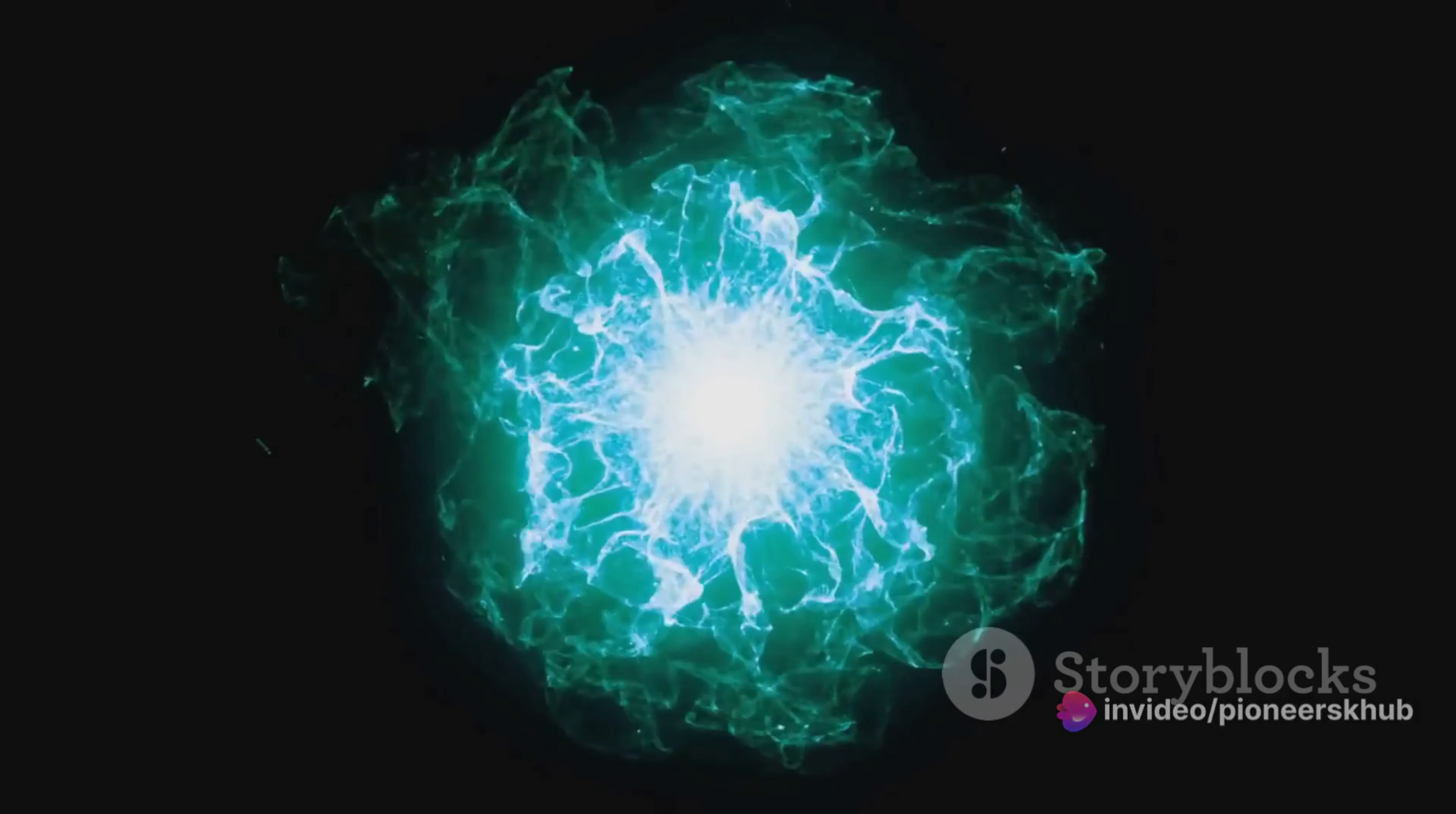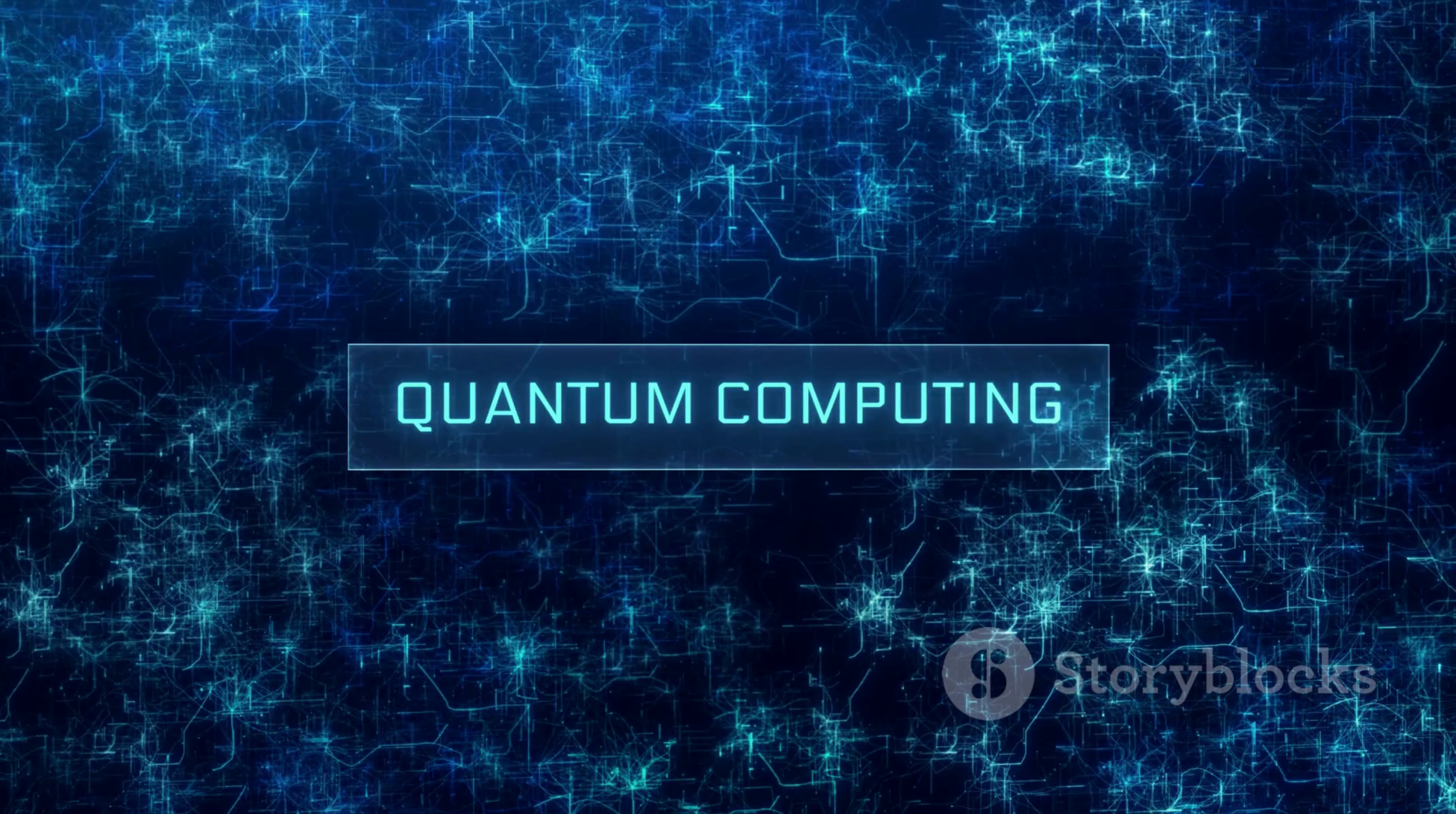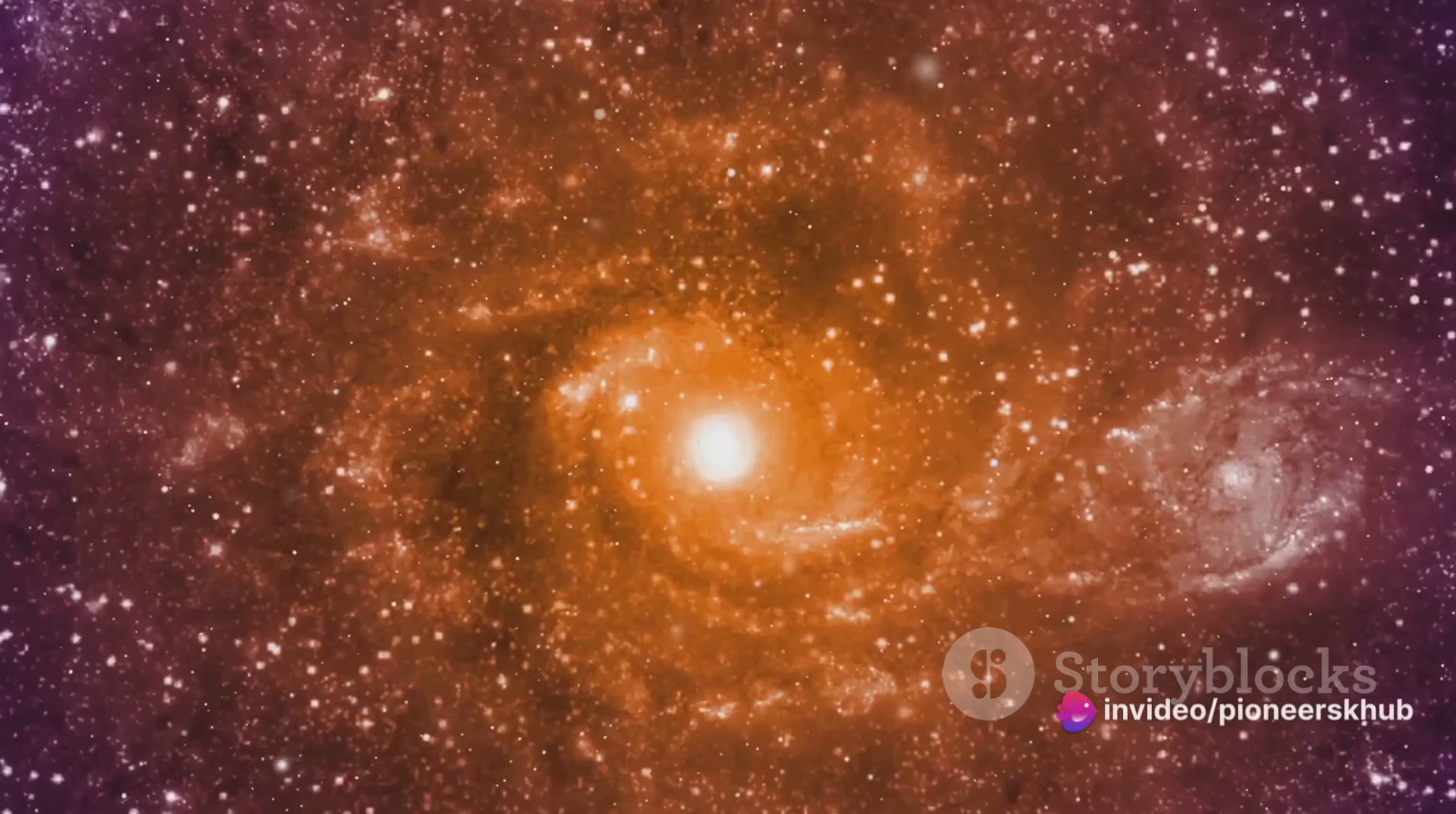Just imagine that, from smaller than an atom to many times the size of a galaxy in less time than it takes to blink. But cosmic inflation isn't just about this fast expansion. It also gives us an explanation for the large-scale structure of the universe. During the inflationary period, tiny quantum fluctuations, random minuscule changes in energy at the subatomic level, were stretched to cosmic proportions. These fluctuations once magnified became the seeds for the galaxies and galaxy clusters we see today. So in a way every star, every planet, every galaxy we observe is a testament to these quantum fluctuations during cosmic inflation.